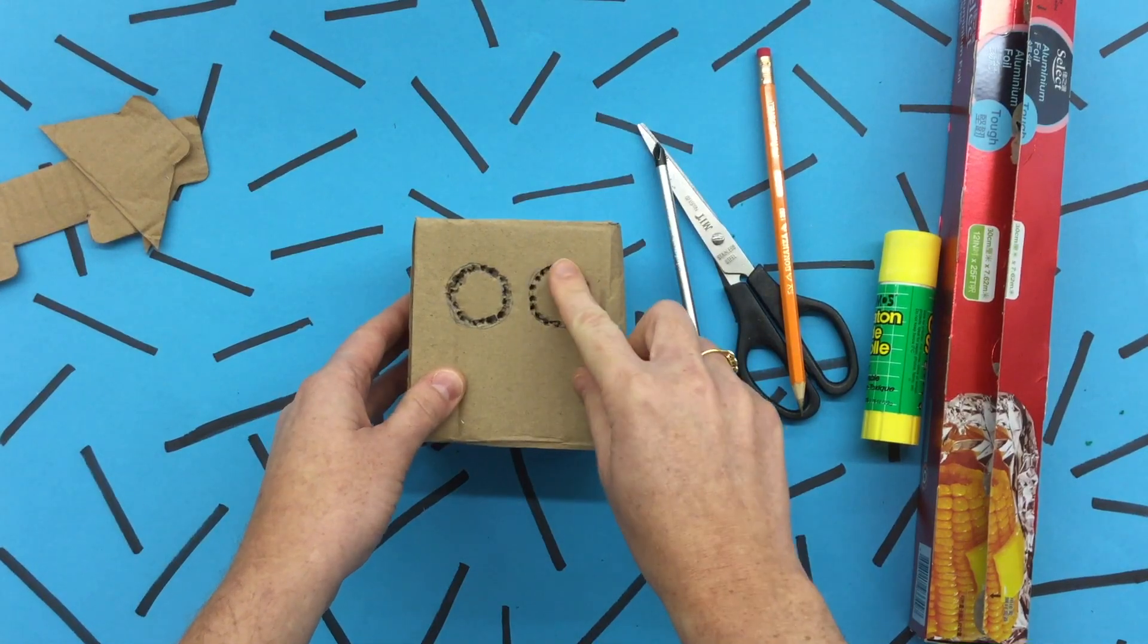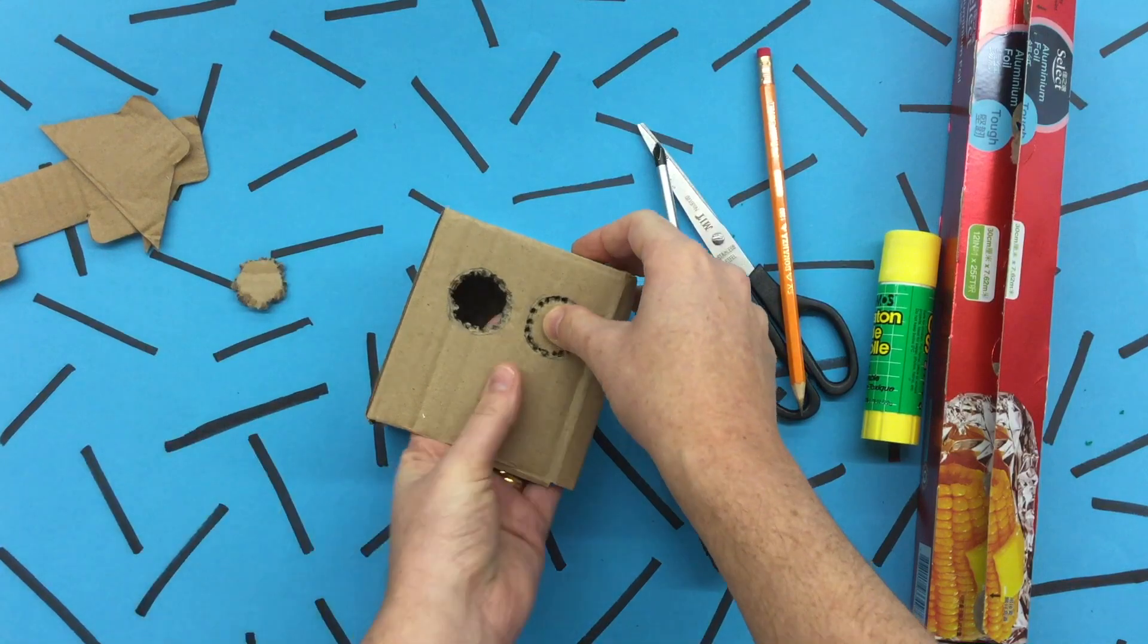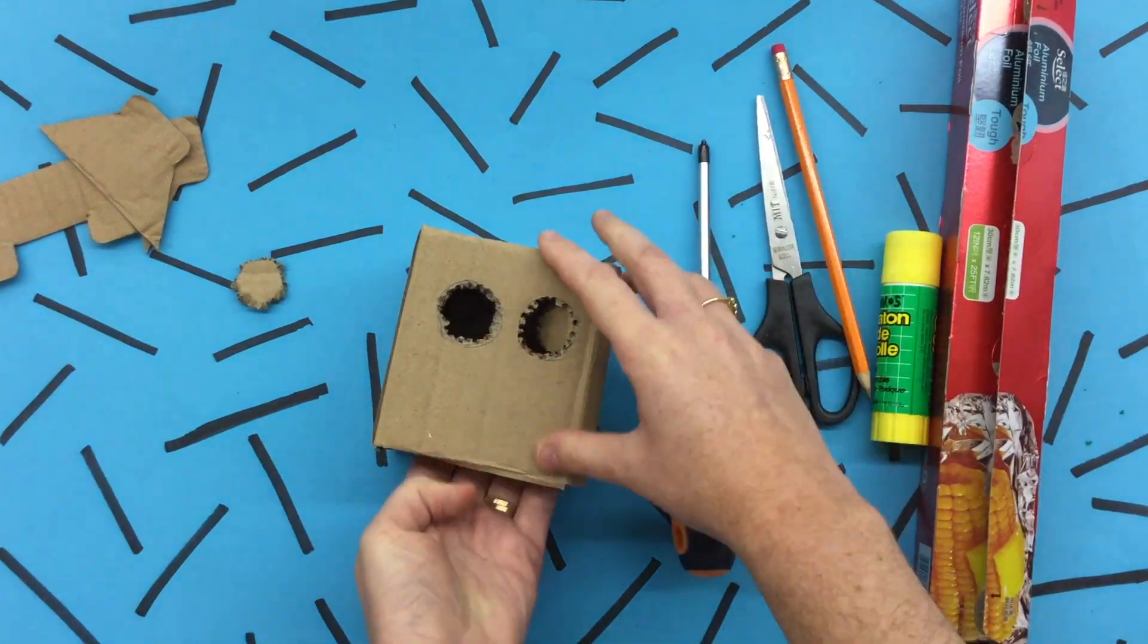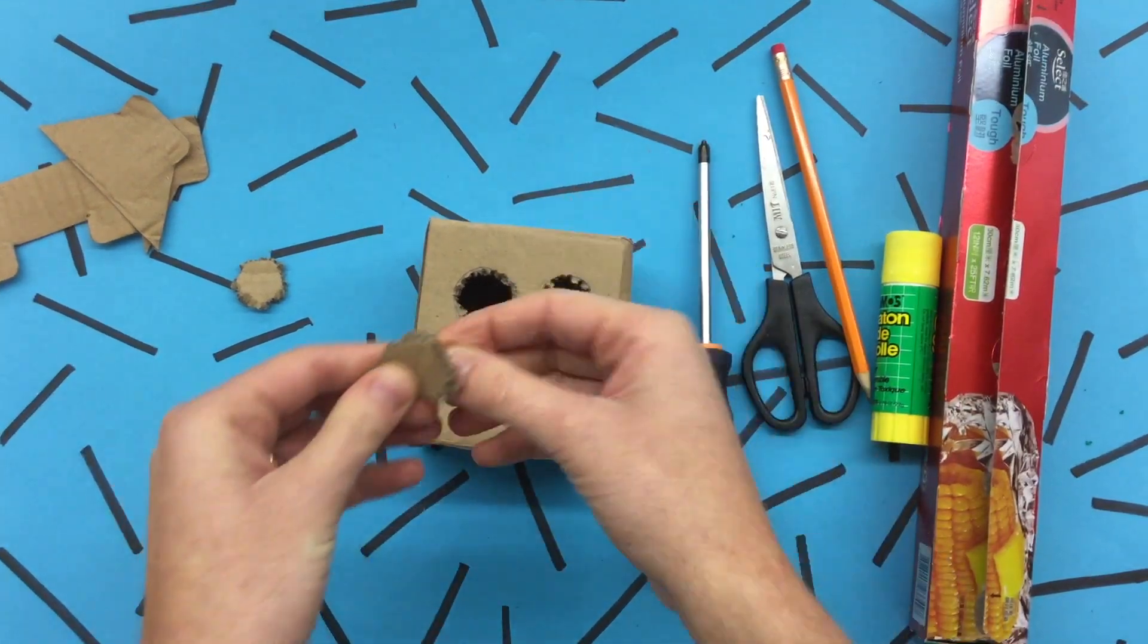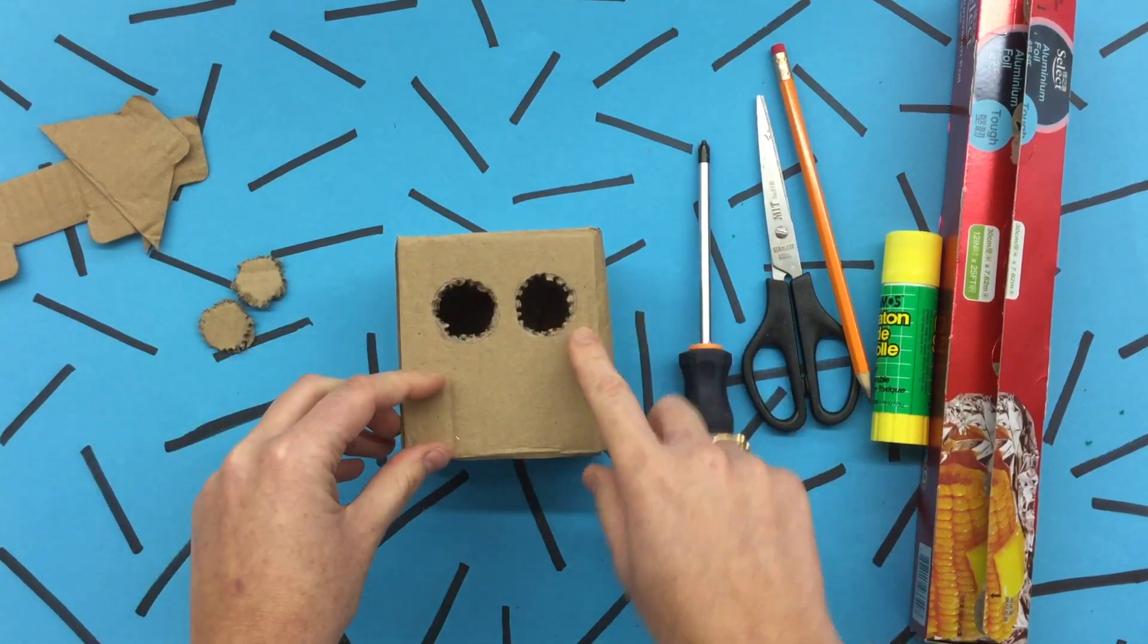There. Once I've poked holes all the way around, I can either use my finger to pop them out or aid me with a bit of the scissors to cut the rest out remaining piece. I can save these pieces and use them later for my robot design. Then I have my two holes.